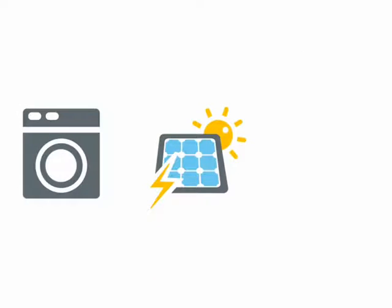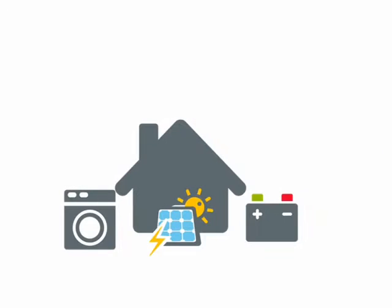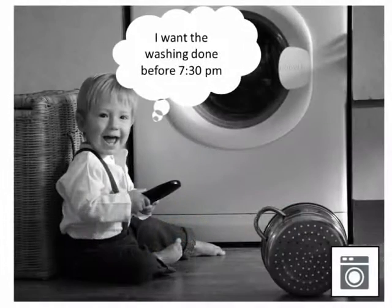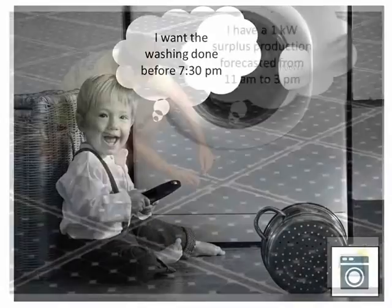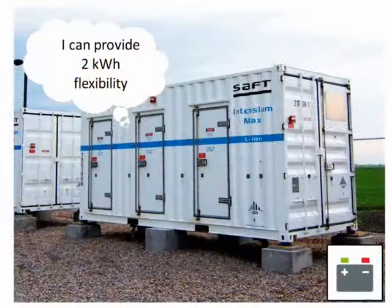Deferrable loads, renewable production, and storage systems are the basic building blocks of a flexible management of energy. Each home can possess one or several of these elements. Moreover, they have preferences and constraints over these flexibilities. For instance, when to use a washing machine, auto-consumption, and storage availability.